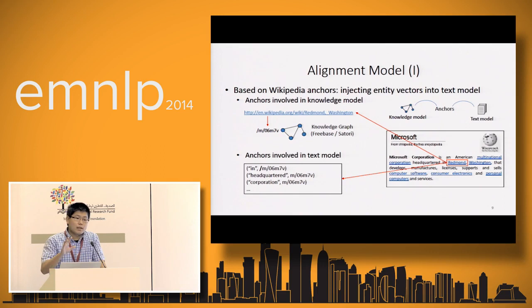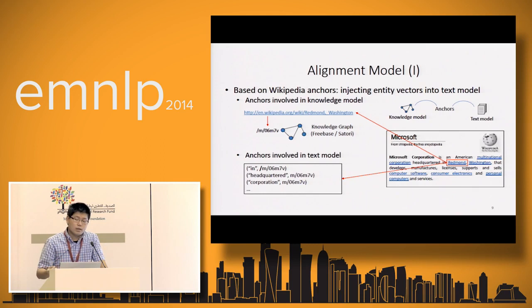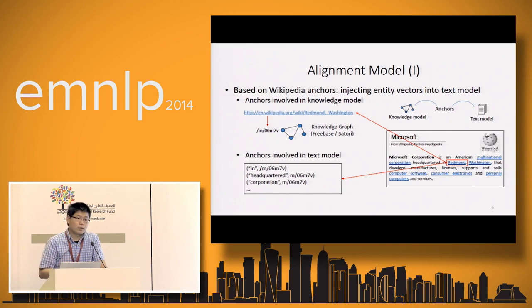We need a mechanism to guarantee entity vectors and word vectors are in the same vector space. We have two approaches. The first is based on Wikipedia anchors: for a Wikipedia page with an anchor such as 'Redmond,' we know which URL it refers to, and we can find the equivalent Freebase entity. This anchor is involved in the knowledge model, and its surface form is also a word in the text model. We require these two vectors to be the same, so the knowledge and text models are correlated by these anchors.